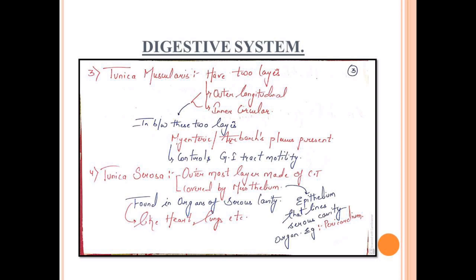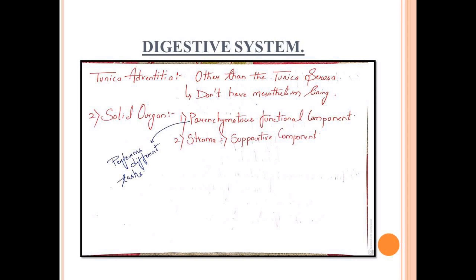Tunica serosa is the outermost layer consisting of connective tissue, covered by mesothelium. Mesothelium lining is a lining of tunica serosa which basically lies in serous cavities like heart and lung. Mesothelium basically is an epithelium lining which covers heart, pericardium, and so on. Next is tunica adventitia which doesn't have mesothelium lining. Organs have two components: parenchymatous component that is functional type, and stroma that is supportive component and supports the parenchymatous function which helps in different tasks.